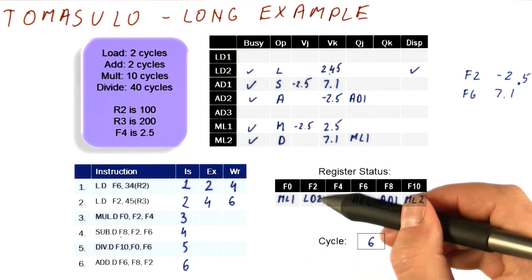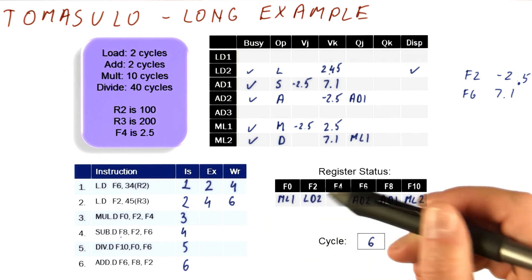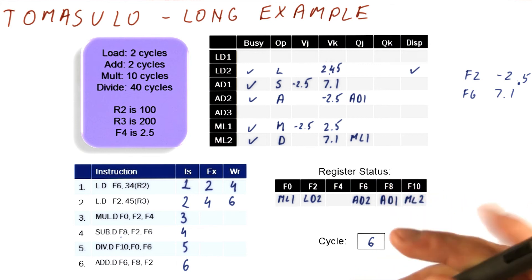And finally, because this entry matches LD2, we're going to change the RAT to once more point to the register file. So this concludes the writing of the result.